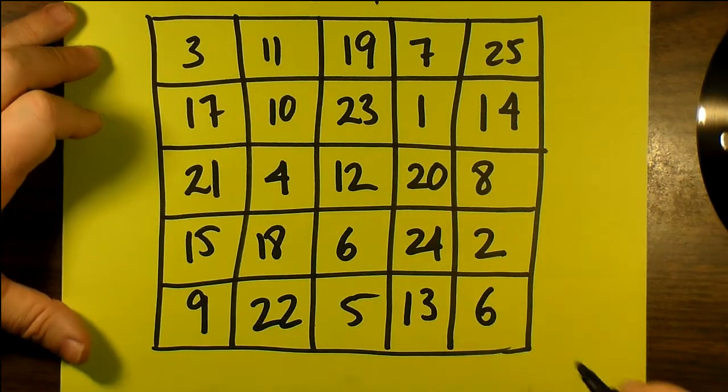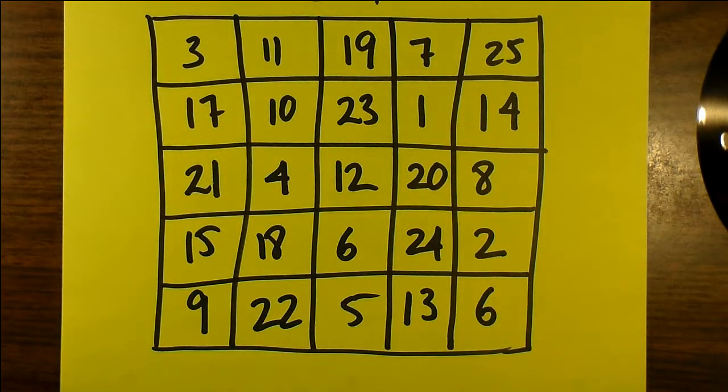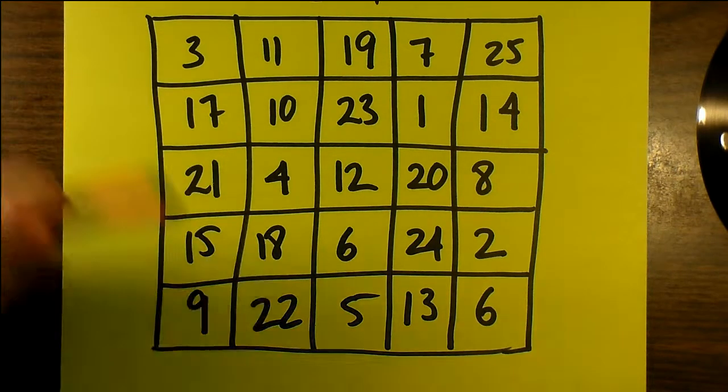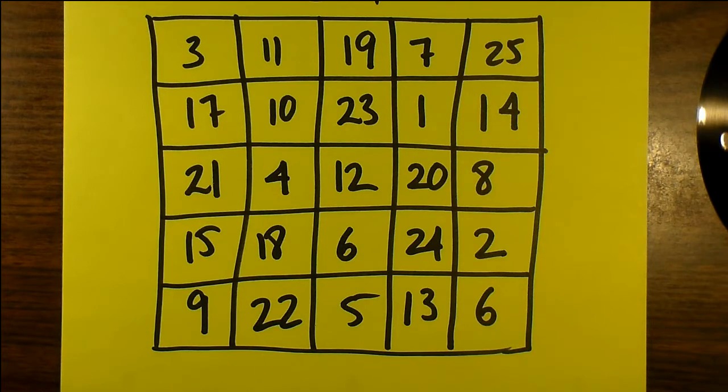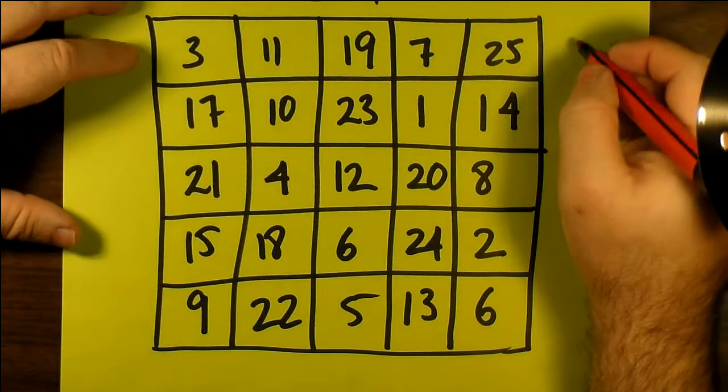Notice the numbers seemingly do not have a pattern. They shouldn't seem to have a pattern, yet all of the numbers will add up to 65 in all of the rows and columns and both diagonals.